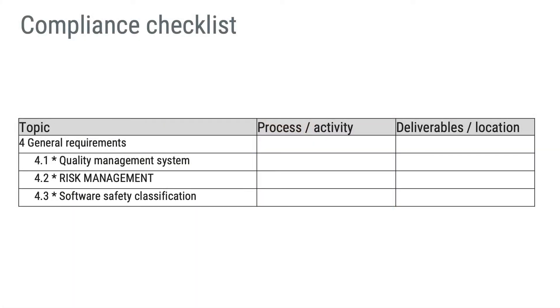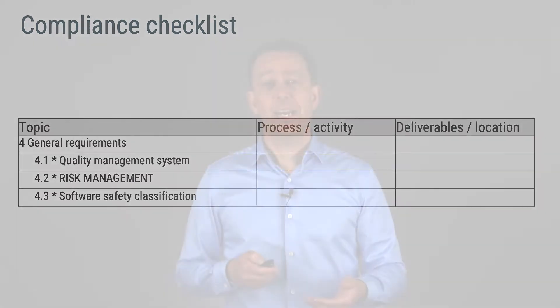Such checklists make things a lot easier, not only to facilitate audits - it is also useful when explaining the requirements behind the development process to your organization. Checklists do not need to be super complicated. You list the requirements in the standard, followed by a description of your process and activities meeting each specific requirement, and lastly, where to find evidence that the activities have been carried out. Checklists can be used to assess a specific project for compliance, but also for the implementation of a standard in an organization.